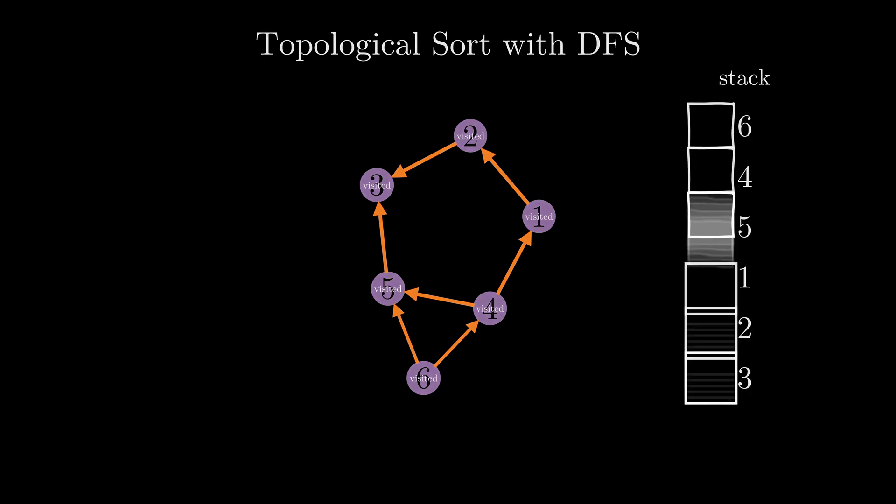So at this point, we've added all of the nodes values to our stack, and actually the order that these nodes occupy in the stack from top to bottom is one topological ordering of this graph. So we can then just pop all of these items off the stack to get our ordering, and this works because a stack is last in first out, which means that the last item added to the stack will be the first to be removed. So we remove these items from top to bottom, and what we're left with is one topological ordering for this graph.